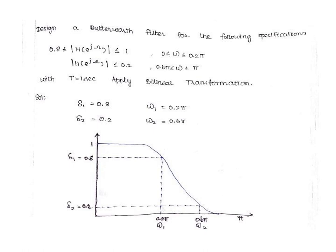Here the problem: design a Butterworth Filter for the following response. 0.8 ≤ |H(e^jω)| ≤ 1 for 0 ≤ ω ≤ 0.2π. And |H(e^jω)| ≤ 0.2 for 0.6π ≤ ω ≤ π, with T = 1 second. Apply bilinear transformation. Here the values are α₁ = 0.8, α₂ = 0.2, ω₁ = 0.2π, ω₂ = 0.6π.